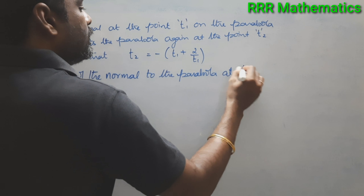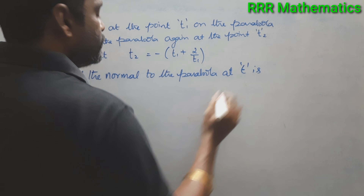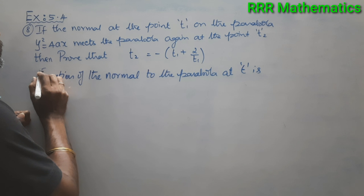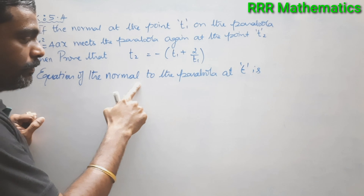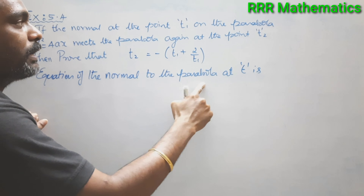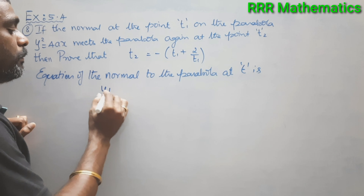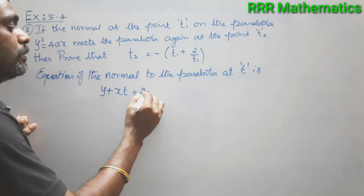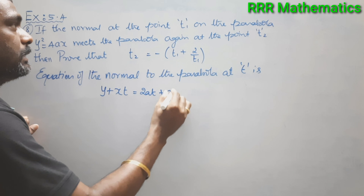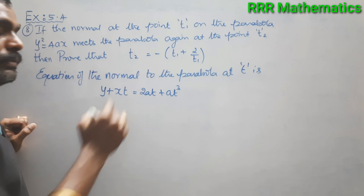The equation of the normal to the parabola y² = 4x at parameter t is: y + x·t = 2at + at³. So the equation of the normal to the parabola at t is y + xt = 2at + at³.